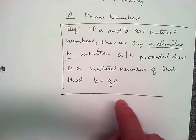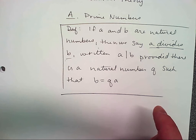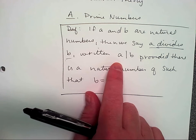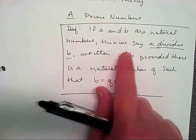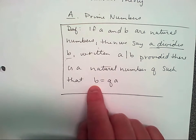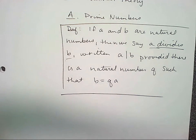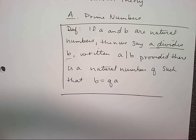A lot of times in math, maybe all the letters can get confusing, but if you can think of an example, it's really helpful. This is something you've completely understood for a long time. Three divides six because six equals two times three — you can write six as something times three.